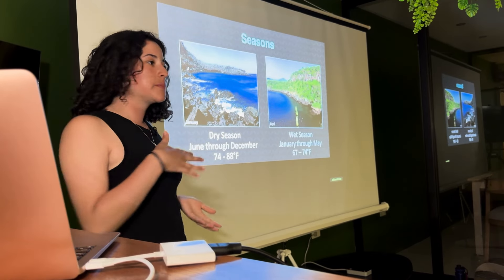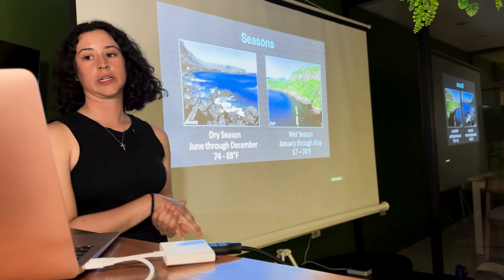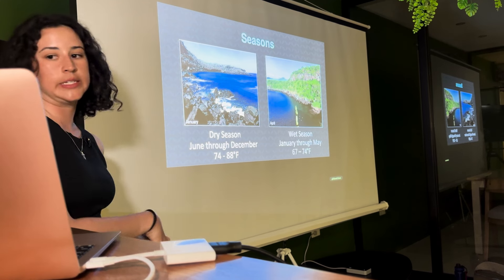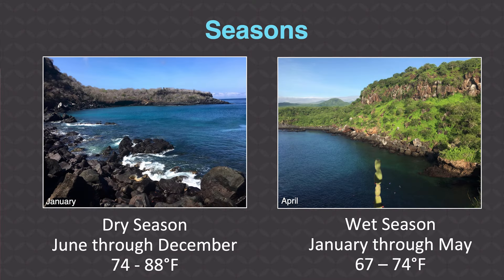Regarding plants, it's important to mention that there are two primary seasons in the Galapagos: the wet hot season and the dry cold season. Temperatures fluctuate a little but stay relatively constant throughout the year. Because of this combination of seasons, we also see complex ecosystems with very specific plants in their habitats.